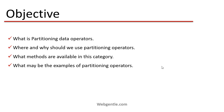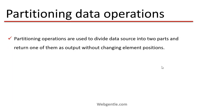Let us start. Partitioning operations are used to divide a data source into two parts. Based on a condition, you divide your data source into two parts and as output you fetch only one part and return it. The main point is that this is done without changing the element positions — you will get only one part but the position of the elements will remain the same.